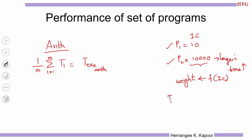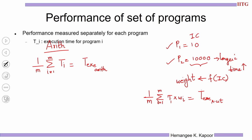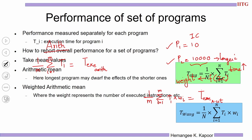We effectively compute Ti multiplied by the weight of Pi, summed over i from 1 to m, to give the weighted arithmetic mean. This is the execution time weighted arithmetic mean, denoted T_EXE_WT. The slide shows both the weighted arithmetic mean and the normal arithmetic mean formulas.